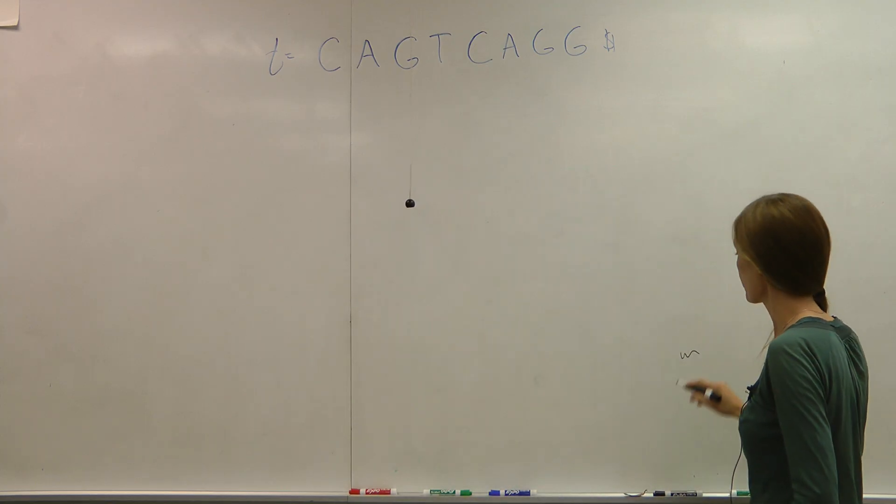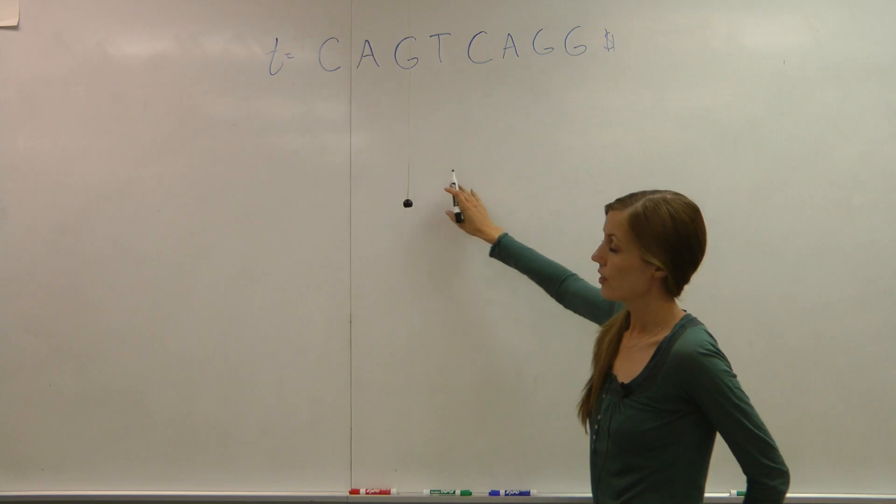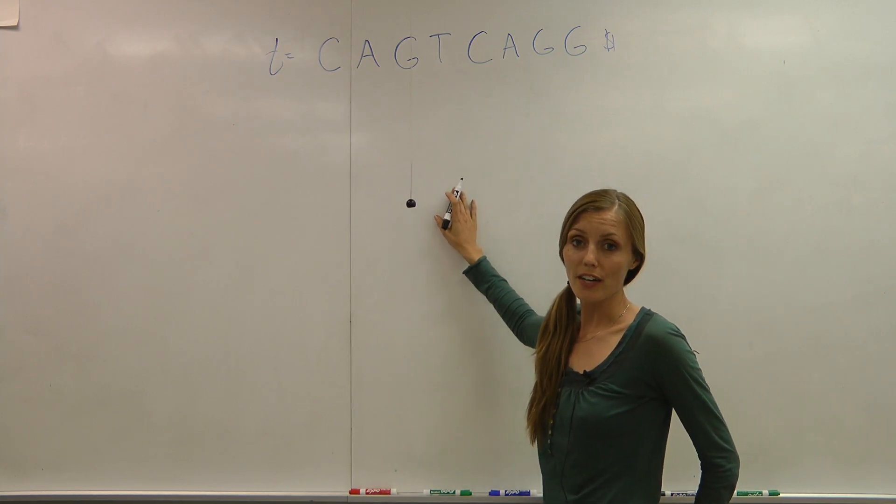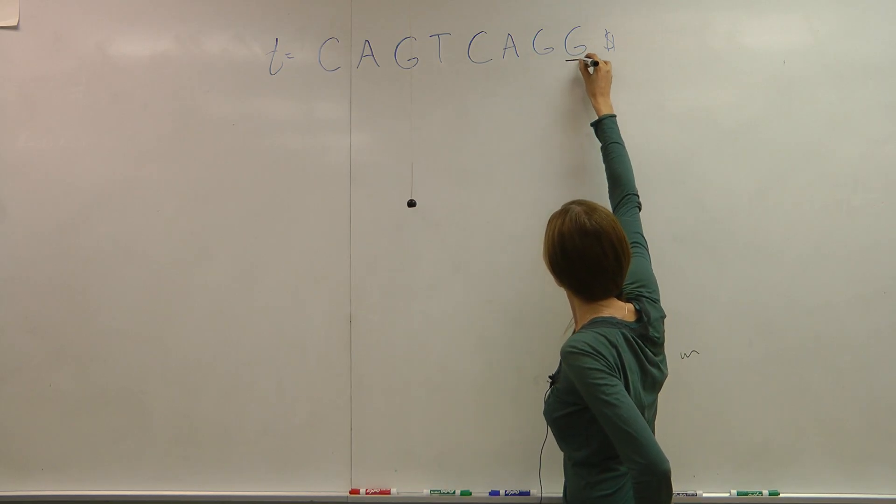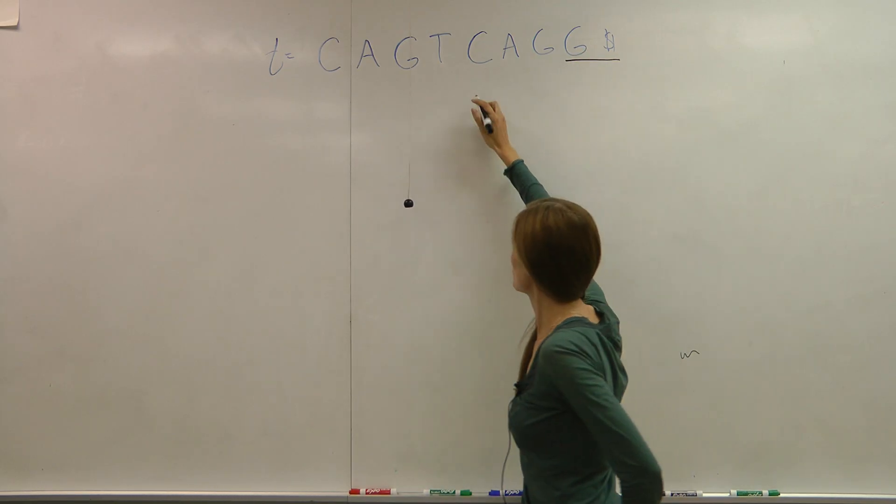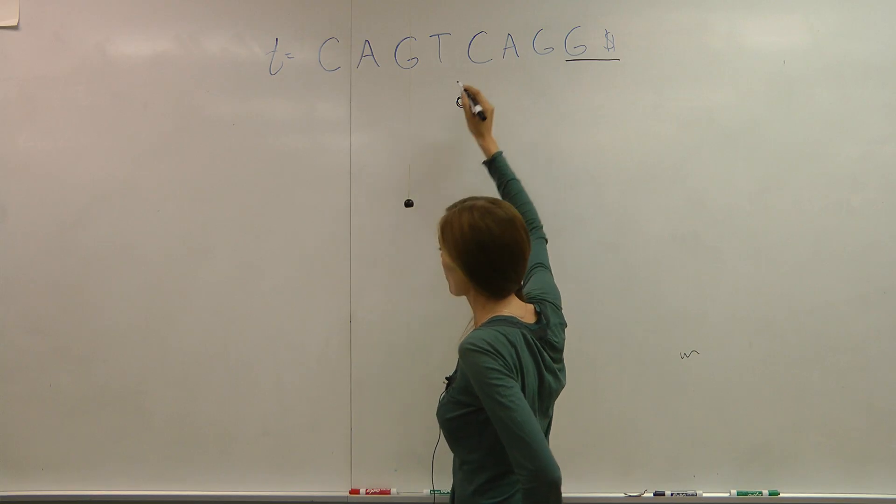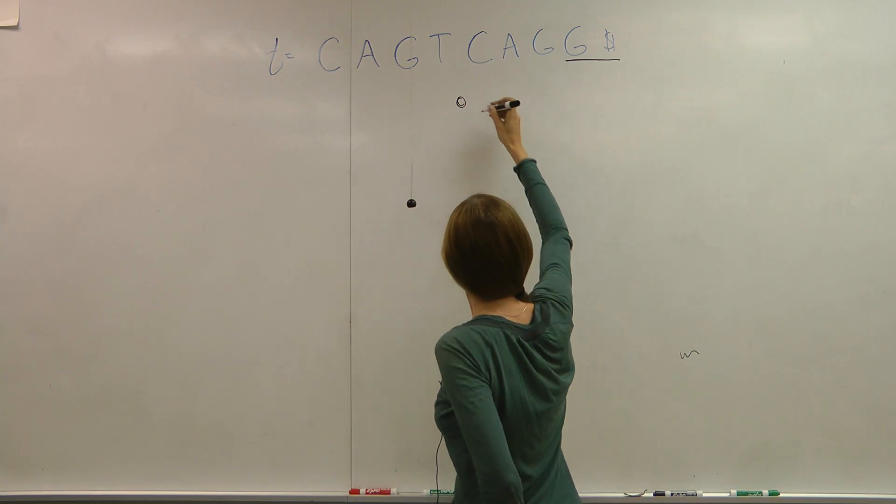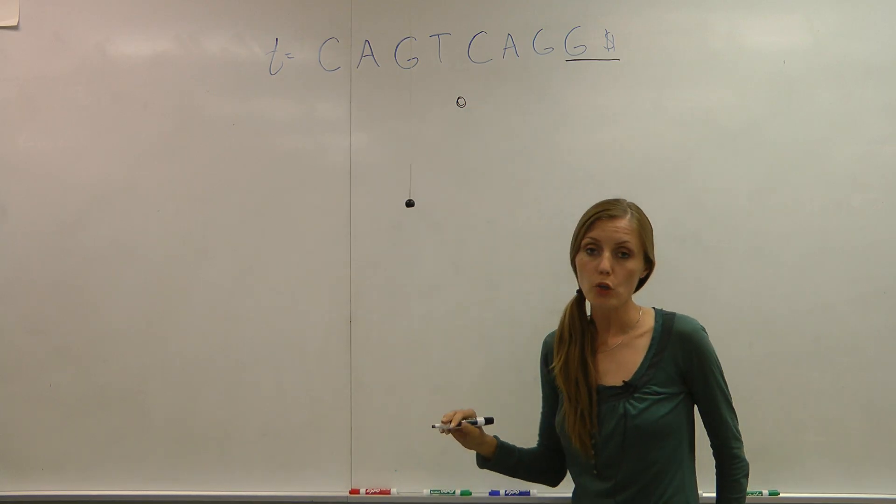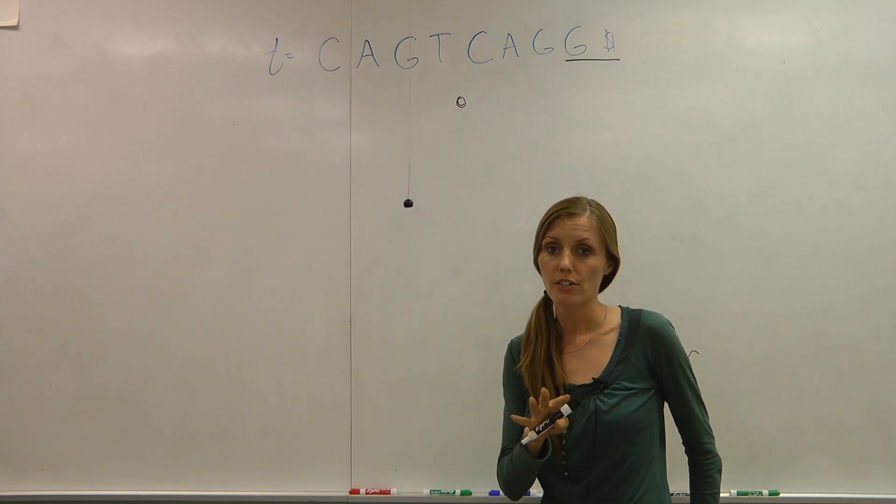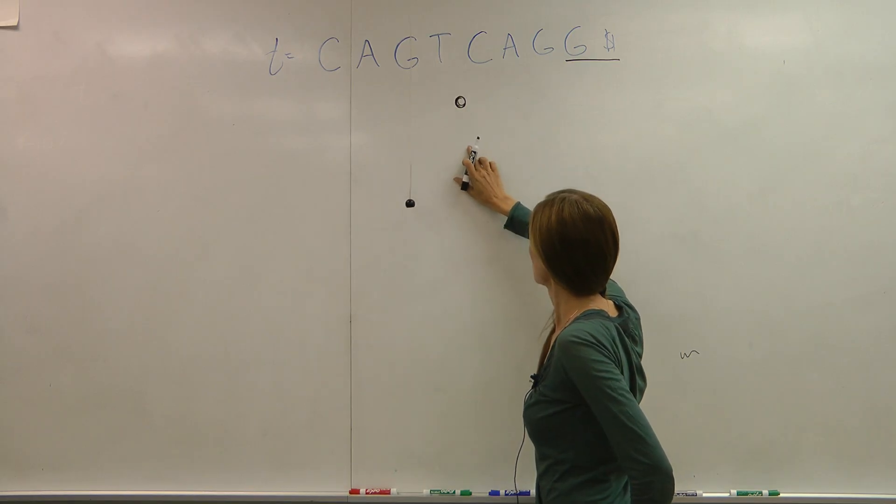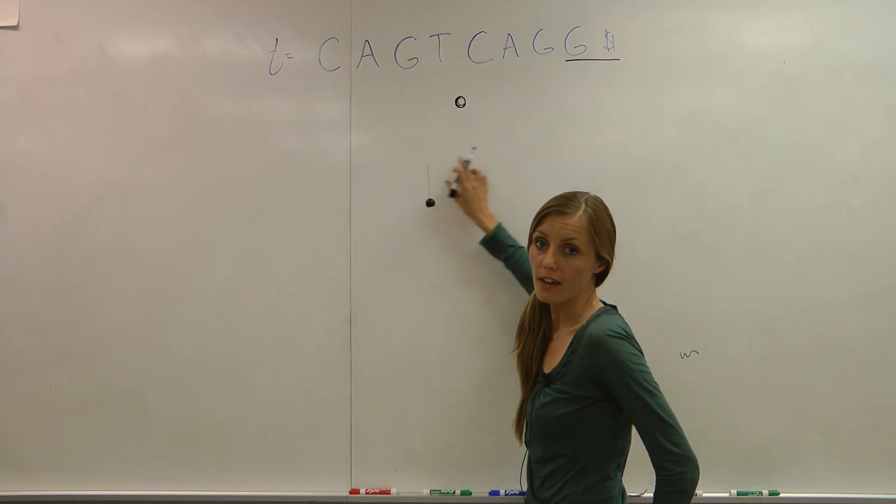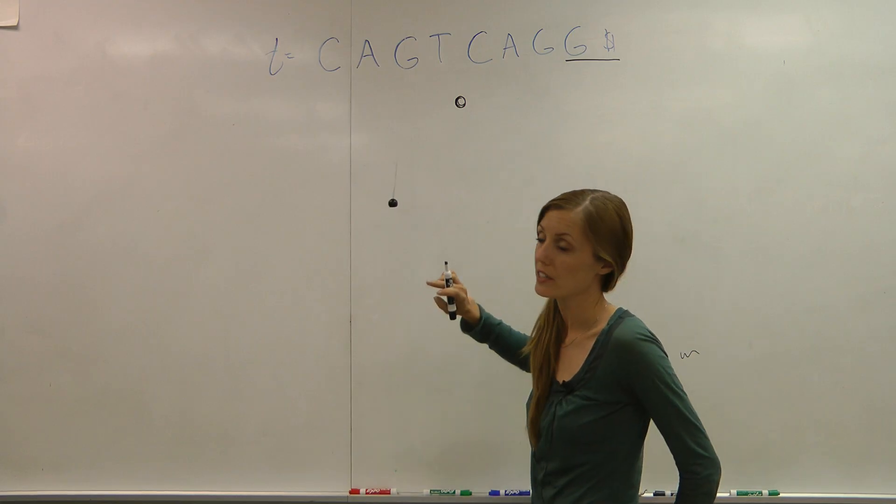Let's check this marker, okay. So the first thing you want to do in creating your suffix tree is to go to your smallest suffix, which is G. We create our root, and then at most we're going to have four branches off every leaf because we can only have four nucleotides, four choices of nucleotides.